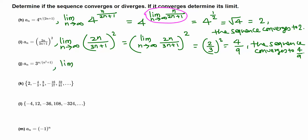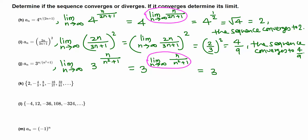Next, let's find the limit as n goes to infinity of 3 raised to n over n squared plus 1. Again, 3 raised to something is an exponential function which is always continuous, so we can take this limit to the exponent. This limit is the same as 3 raised to the limit as n goes to infinity of n over n squared plus 1. For this infinite limit, we only consider the leading terms: n over n squared.